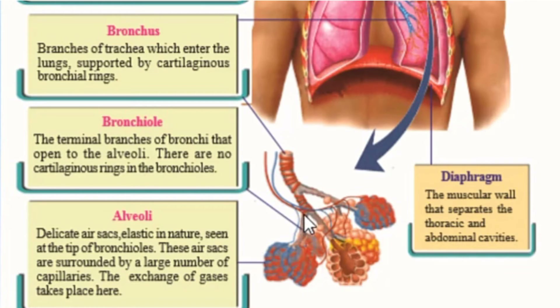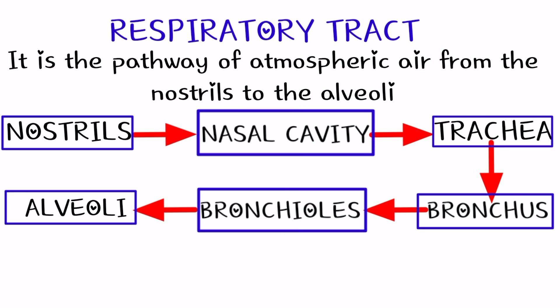The diaphragm is a muscular wall that separates the thoracic and abdominal cavity. It is C-shaped muscle.